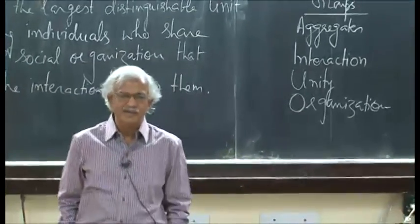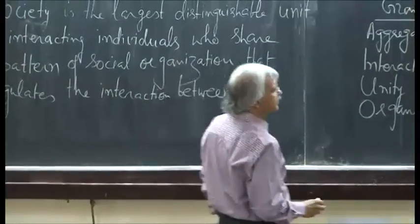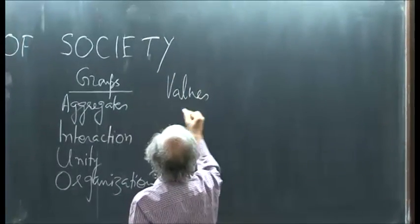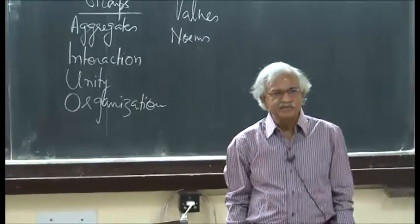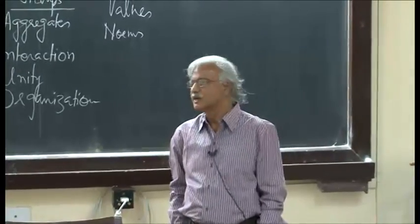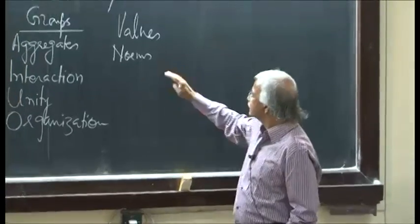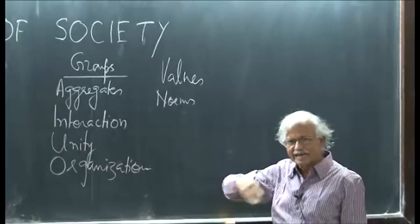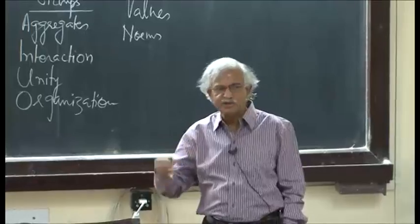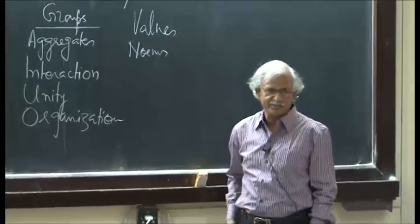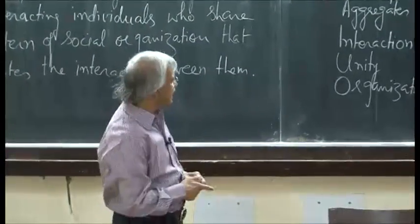I also made a difference between values and norms. Values are matters of right and wrong, good and bad, beautiful and ugly — they are standards of behavior. Norms guide or regulate human behavior in pursuance of the values of society. I am recapitulating so that there is more clarity on these issues.